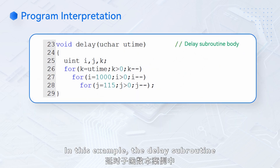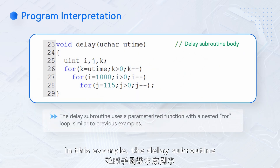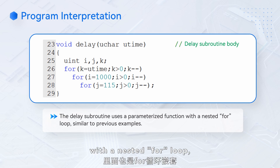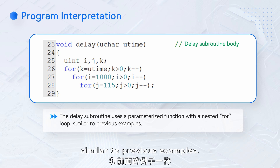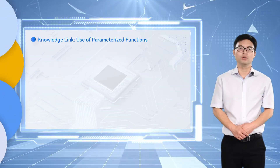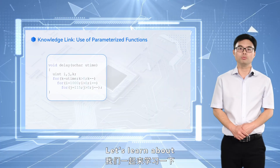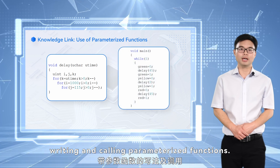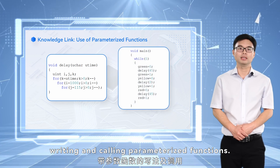In this example, the delay subroutine uses a parameterized function with a nested for loop, similar to previous examples. Let's learn about writing and calling parameterized functions.